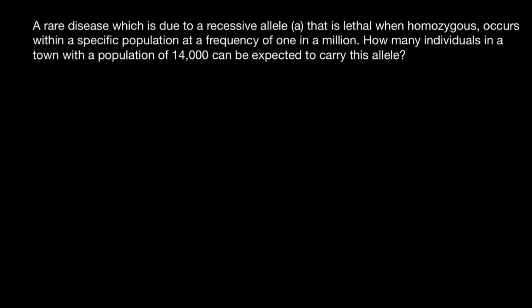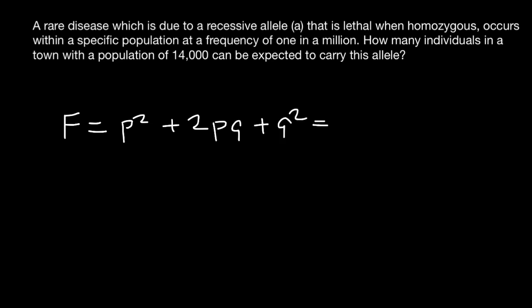To solve this problem we are going to use the Hardy-Weinberg formula, where f stands for the frequency of the three genotypes that can be made by two alleles: p² + 2pq + q² = 1. Here p² stands for the homozygous dominant genotype, 2pq stands for the heterozygous genotype, and q² stands for the homozygous recessive genotype.